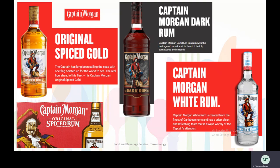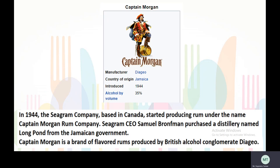Captain Morgan rum comes in three varieties: Original Spiced Gold, Captain Morgan Dark Rum, and Captain Morgan White Rum. It is manufactured by Diageo. Country of origin is Jamaica and it was first introduced in 1944, with alcohol by volume of 35%. In 1944, Seagram's Company based in Canada started producing rum under the name Captain Morgan Rum Company. Captain Morgan is a brand of flavoured rum produced by British alcohol company Diageo.